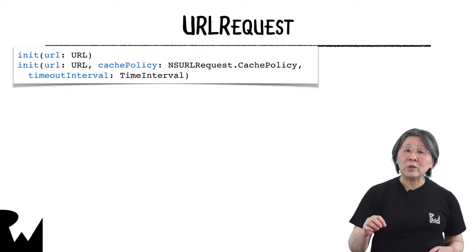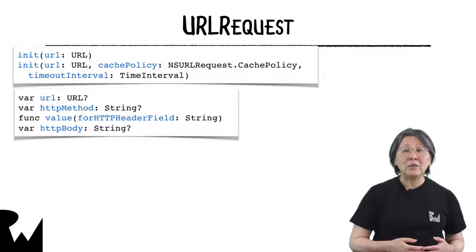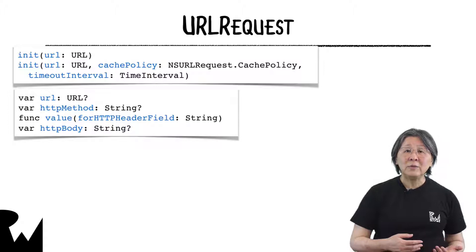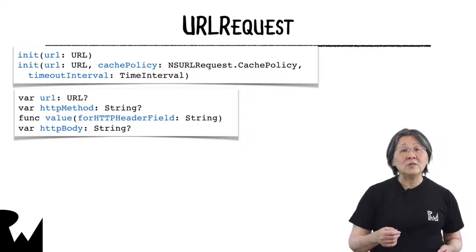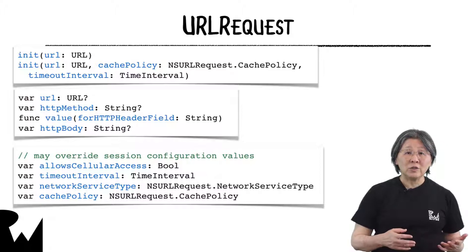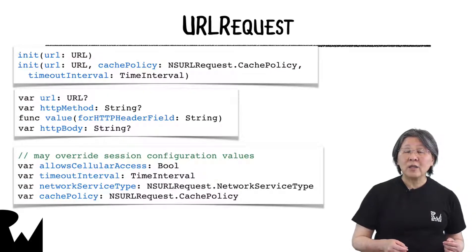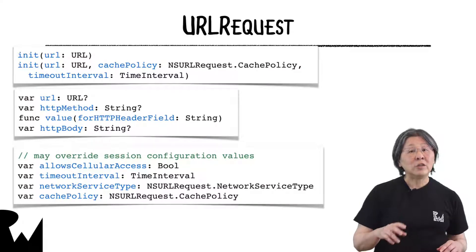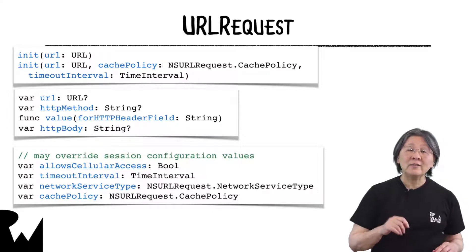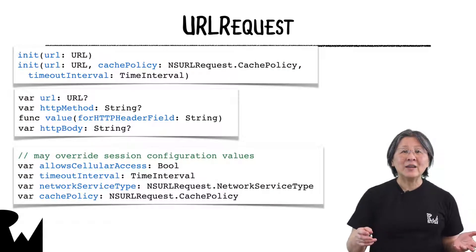There are two main reasons for creating a request. The first is to modify the HTTP method, headers, and body before sending the request. The default HTTP method is GET, so you must create a request to POST, PUT, or DELETE. POST and PUT need an HTTP body. The second reason is to override configuration settings for this request. A value set on the request usually overrides the value from the session configuration. For example, the request can specify a different network service type. However, if the configuration's value is more restrictive, it will take precedence. If the session configuration has set allow cellular access to false, setting it to true in a request will not override that value. Conversely, if the configuration allows cellular access, a request can disallow it.